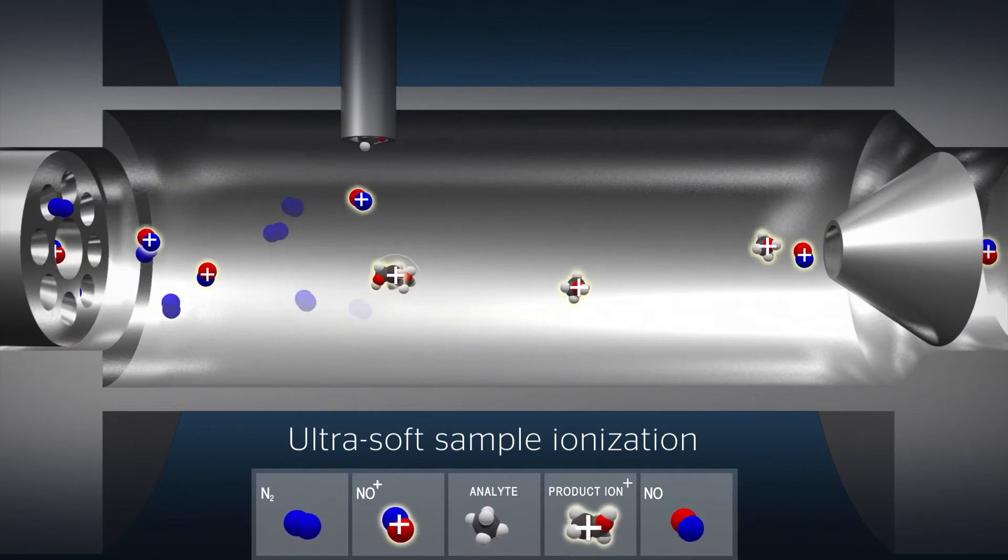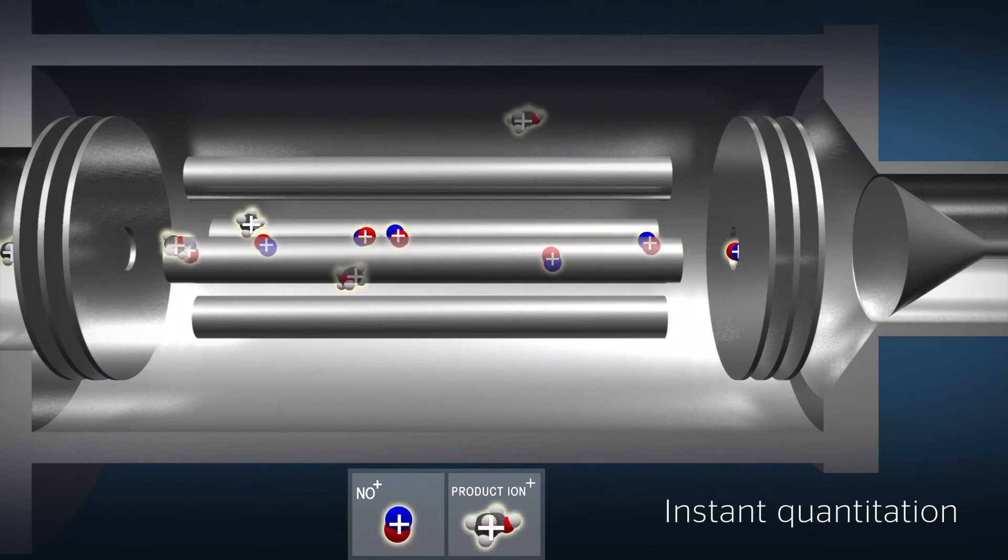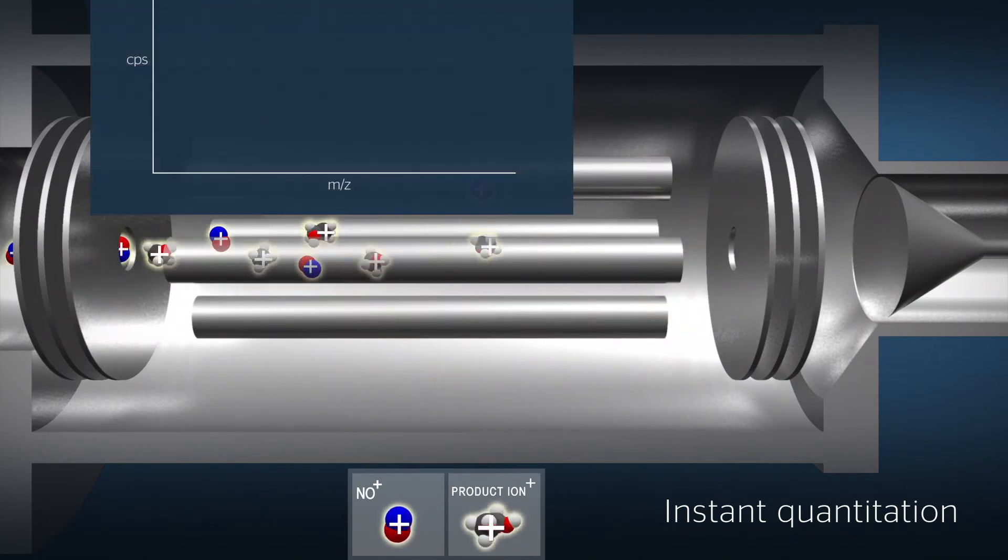At the exit of the flow tube, product and reagent ions are focused into a second quadrupole. All ions are transmitted in sequence to a detector and the resulting signal is recorded for each.